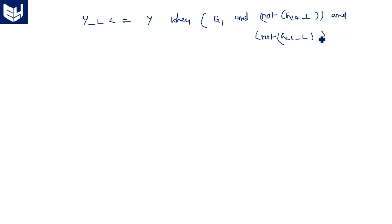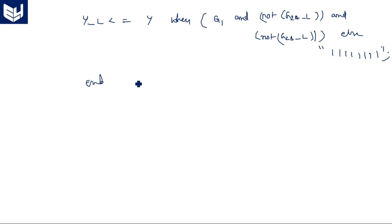End dataflow. This is the VHDL code for the 3-to-8 decoder 74138 in dataflow architecture. Thank you.